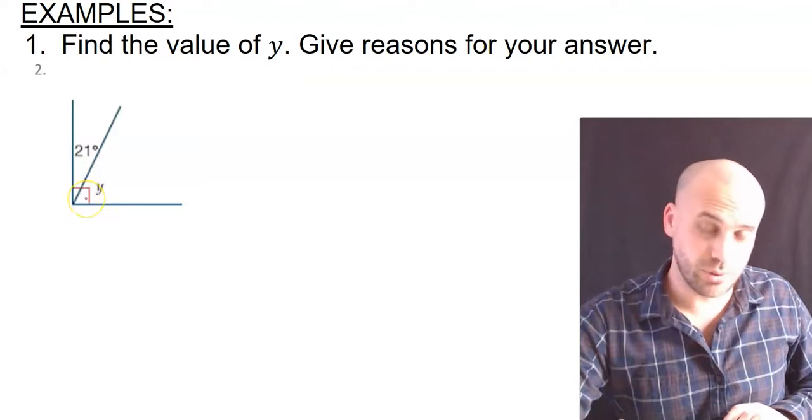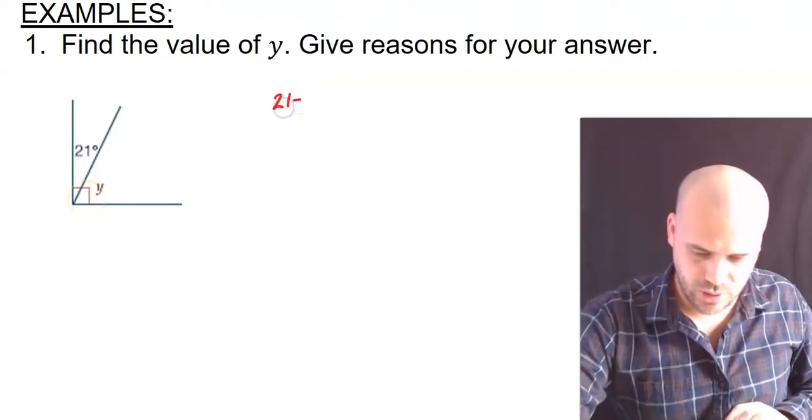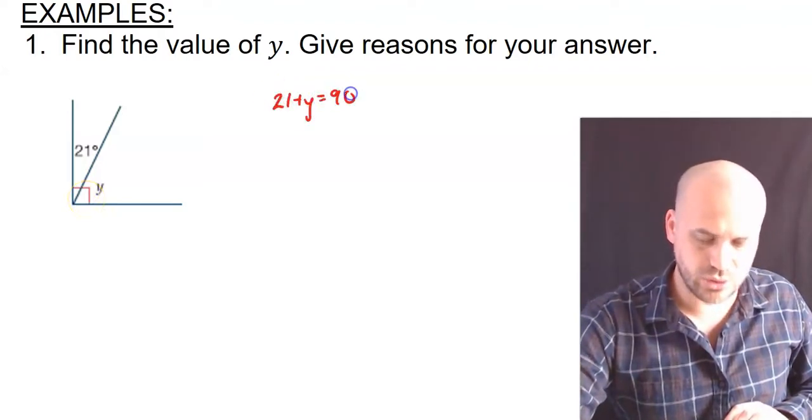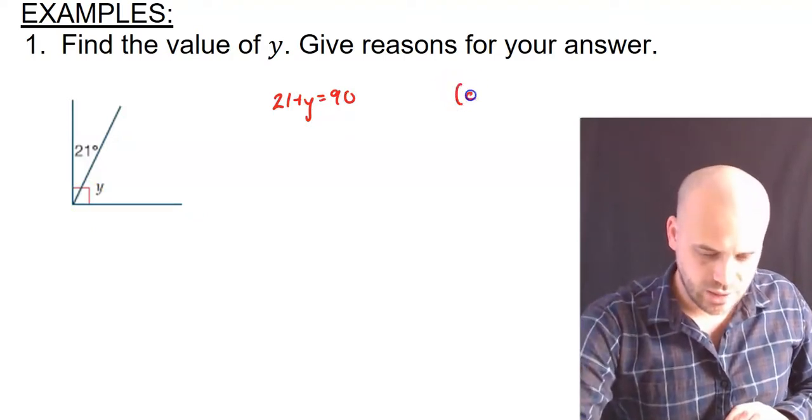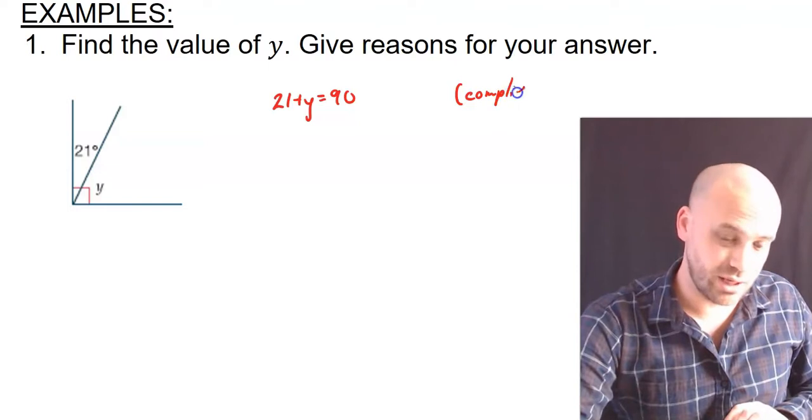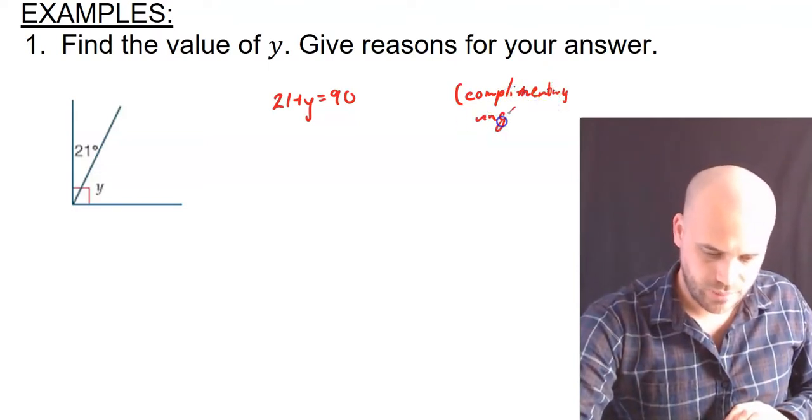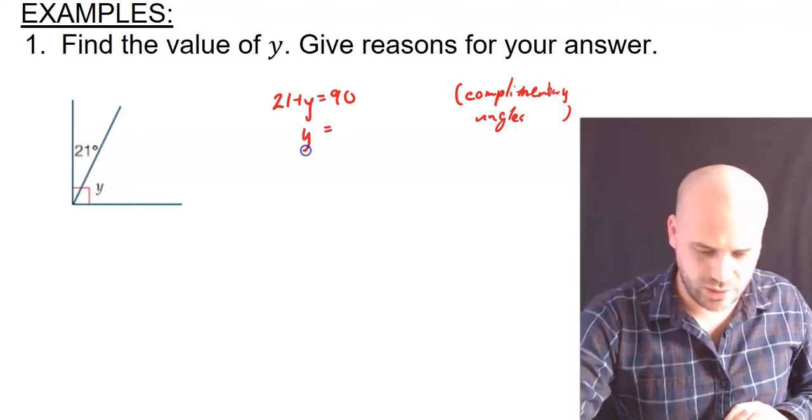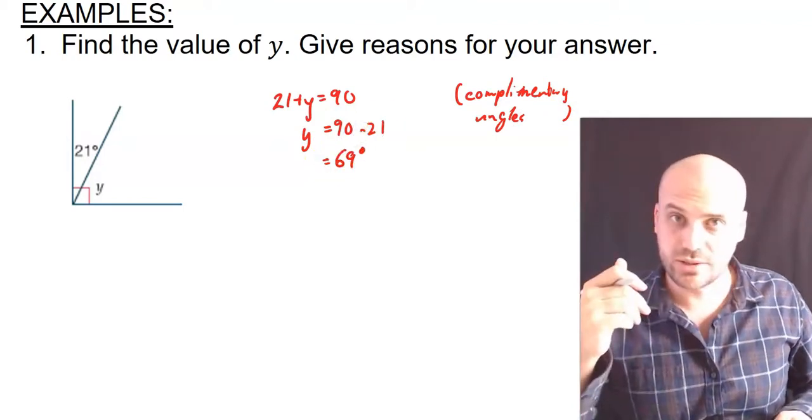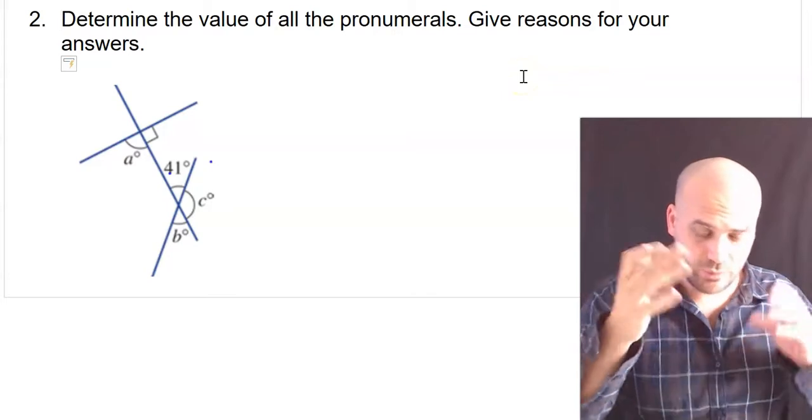This one here, we have two complementary angles. So we can say that 21 plus y is equal to 90. Now, it's going to be really important that we write some sort of reason here. They are complementary angles, and that's reason enough for us to do what we're doing here. And then we just solve this algebraically. So y equals 90 minus 21, which equals 69 degrees.